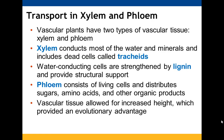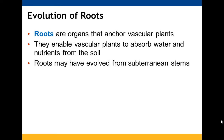Xylem takes up water and minerals and is strengthened by lignin. Phloem takes up nutrients. These two work together to help plants grow taller, giving them an evolutionary advantage. Roots help to anchor vascular plants, absorb water and nutrients, and may have originated from subterranean stems that were growing below the soil surface.